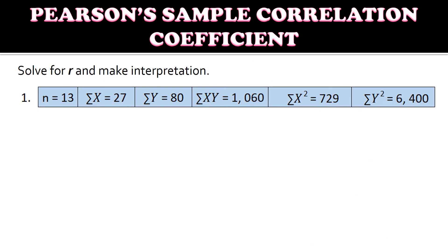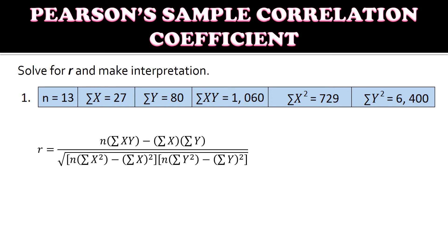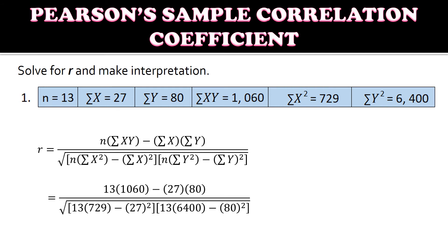Let's have another example where the values are already given and we just substitute them into the formula. Using the formula for r and substituting the values, the computed r is 0.45. Looking at the table, a value of 0.45 is a low positive correlation.